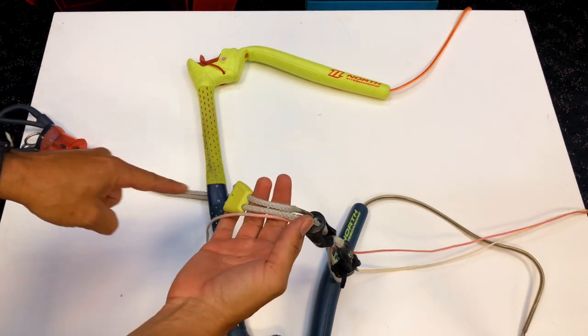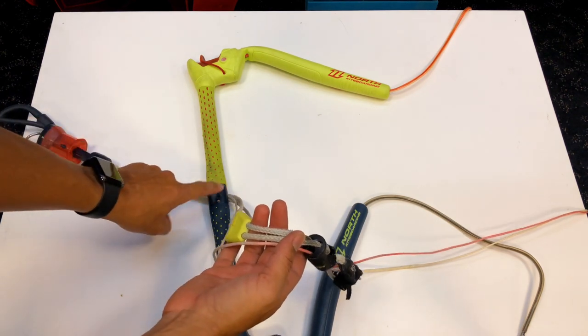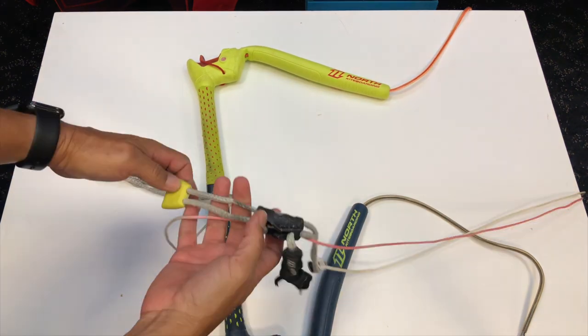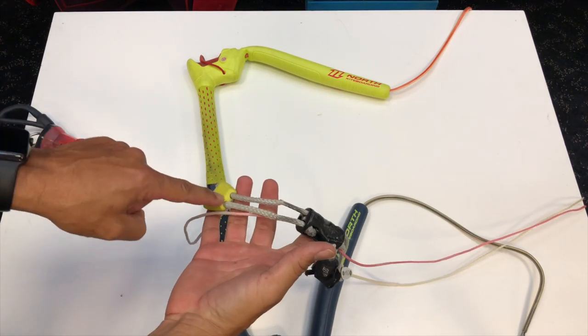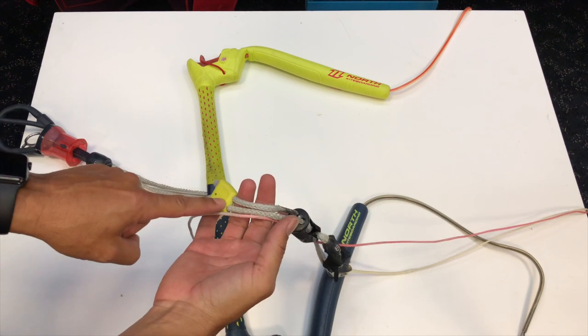The number one tip is make sure you put the stopper ball if it has one back on the correct way. So you're going to thread one line through, bring it down around the loop, put it back through. Make sure to go back through the bar.